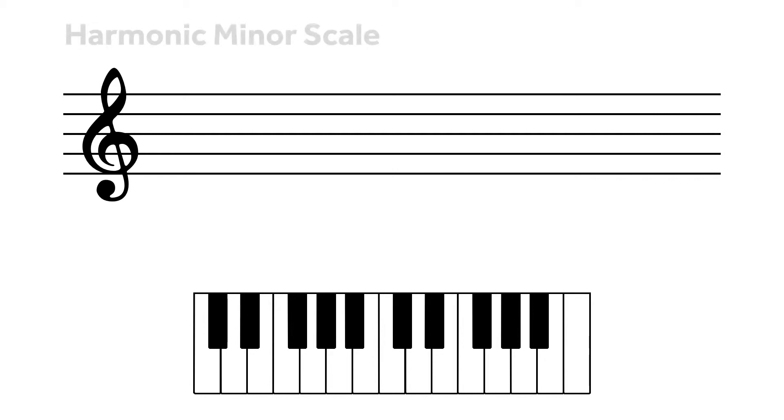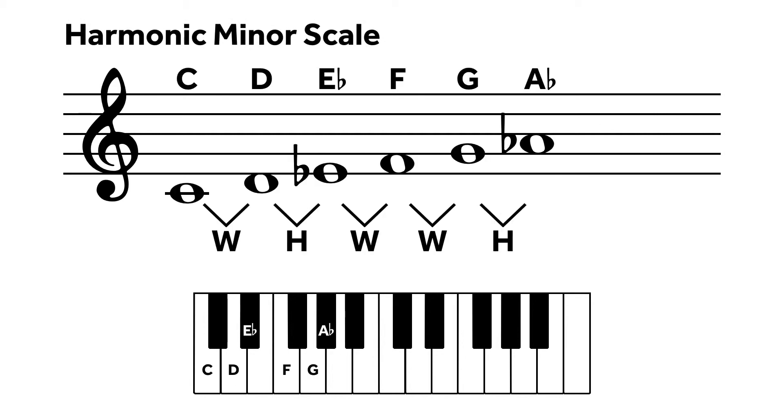The pattern for harmonic minor is whole, half, whole, whole, half, whole plus a half, half.